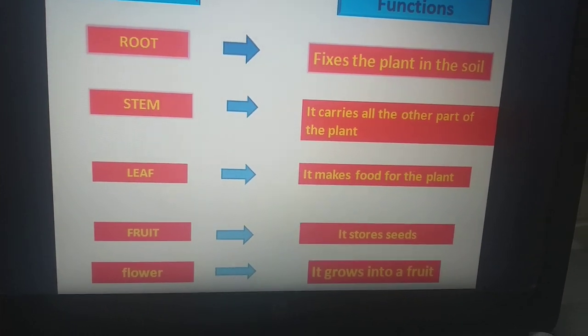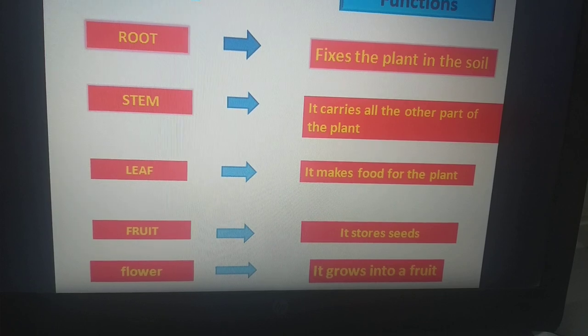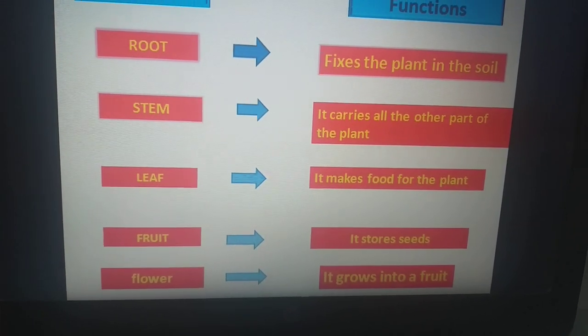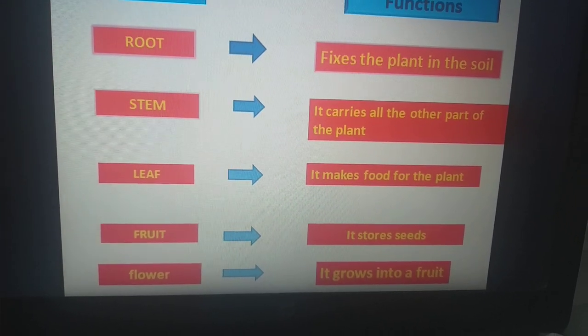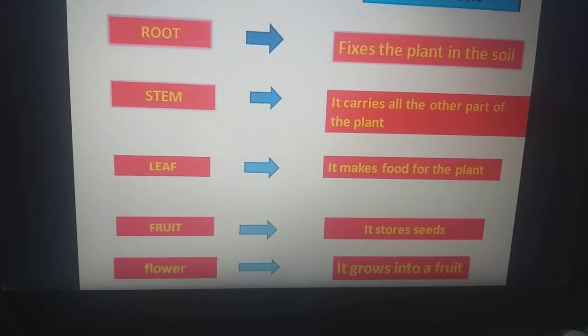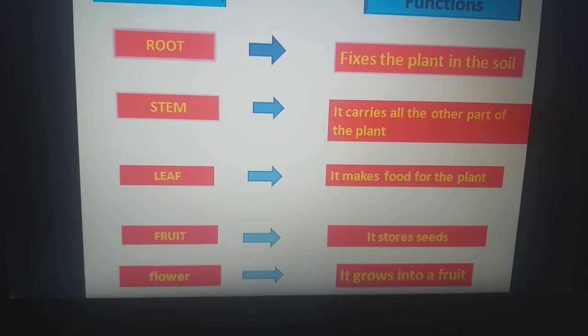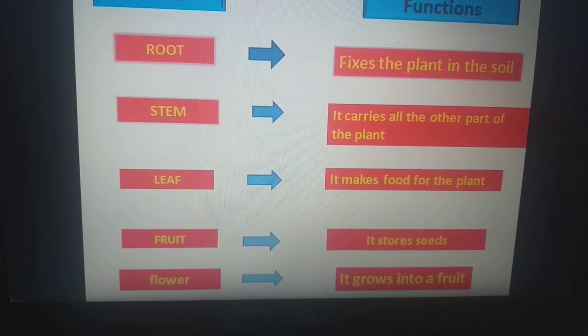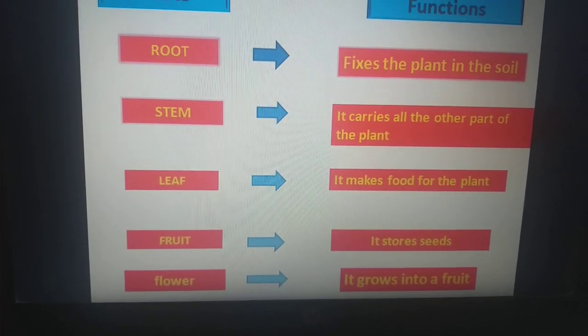Some leaves are green in color. Some are red. Some are yellow. But why most of the leaves are green in color? Why do you know? Because a green color substance present in leaves. It is called chlorophyll. And chlorophyll makes the leaf green.